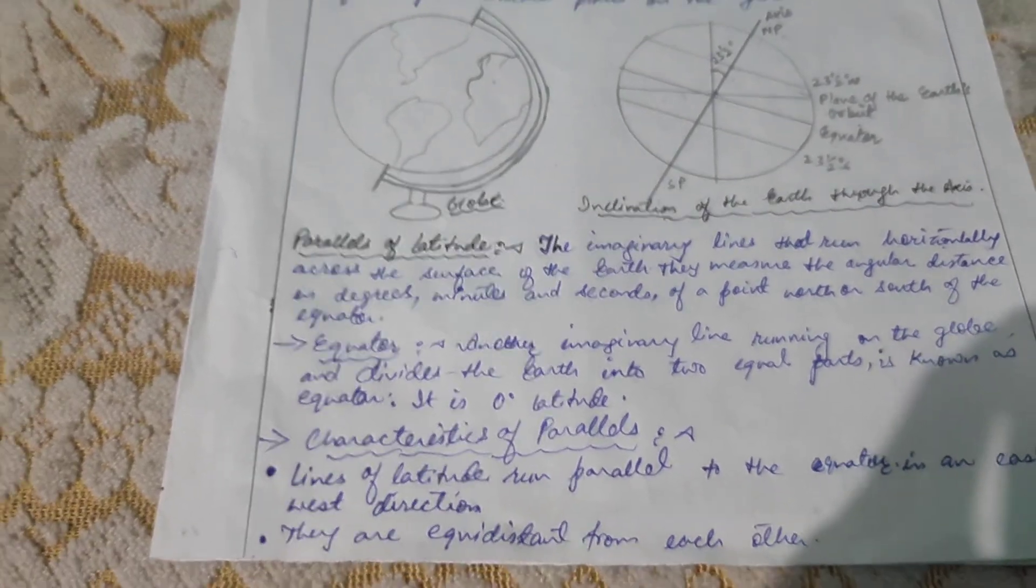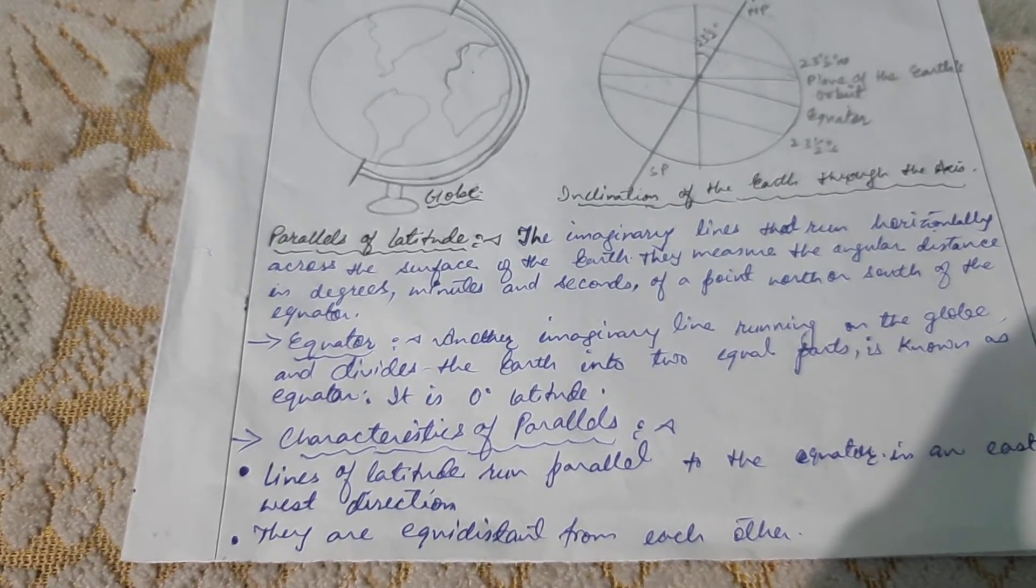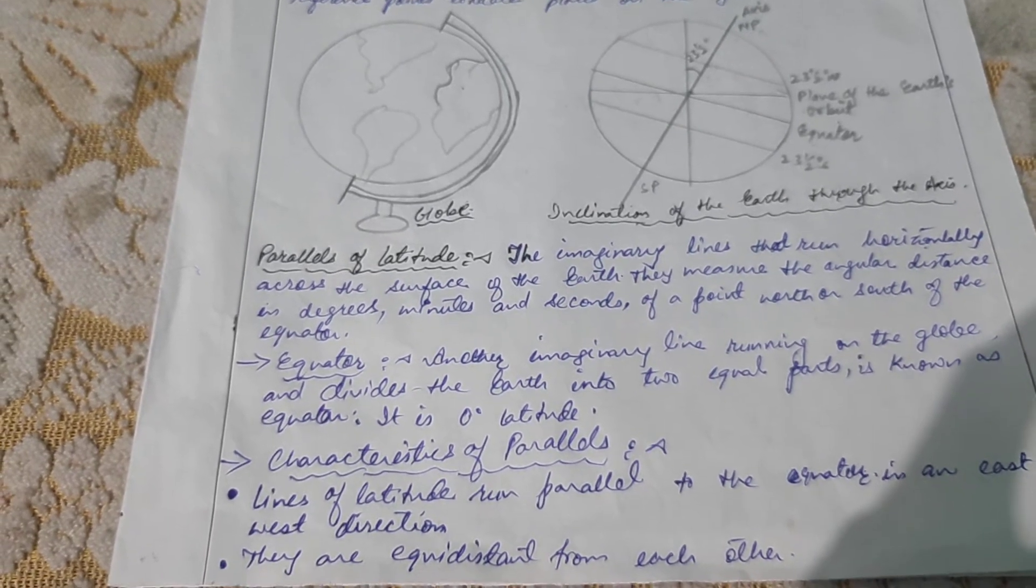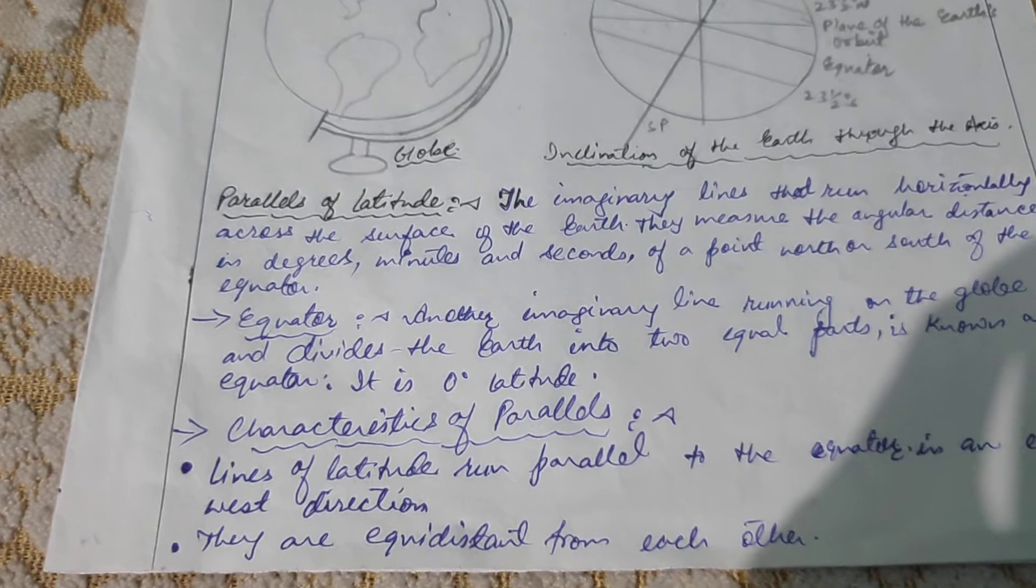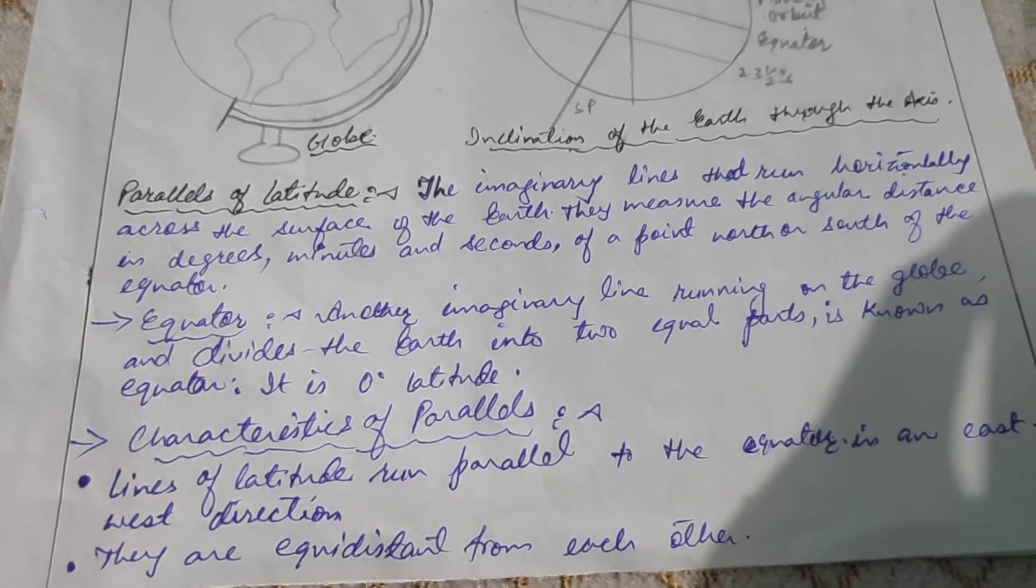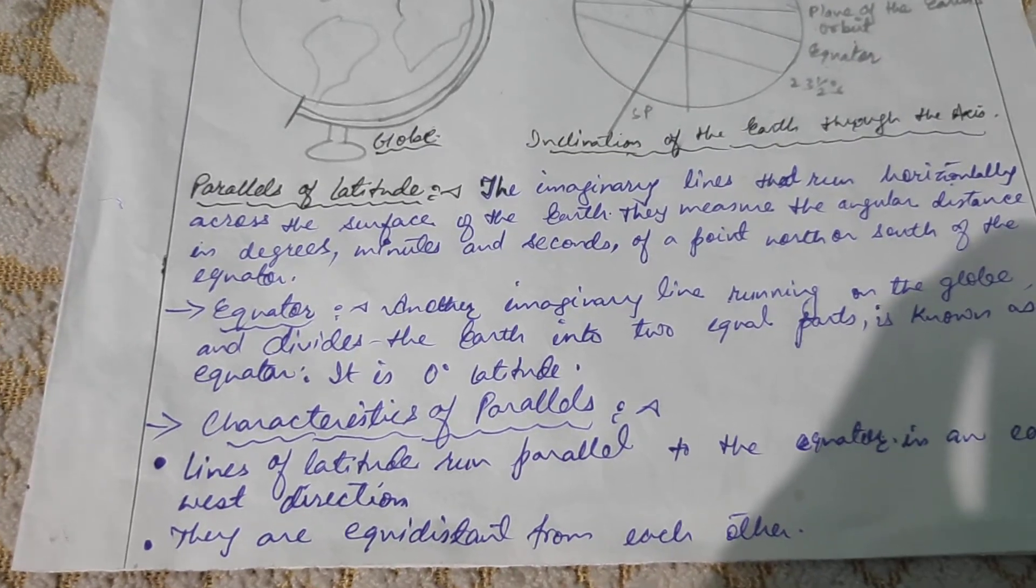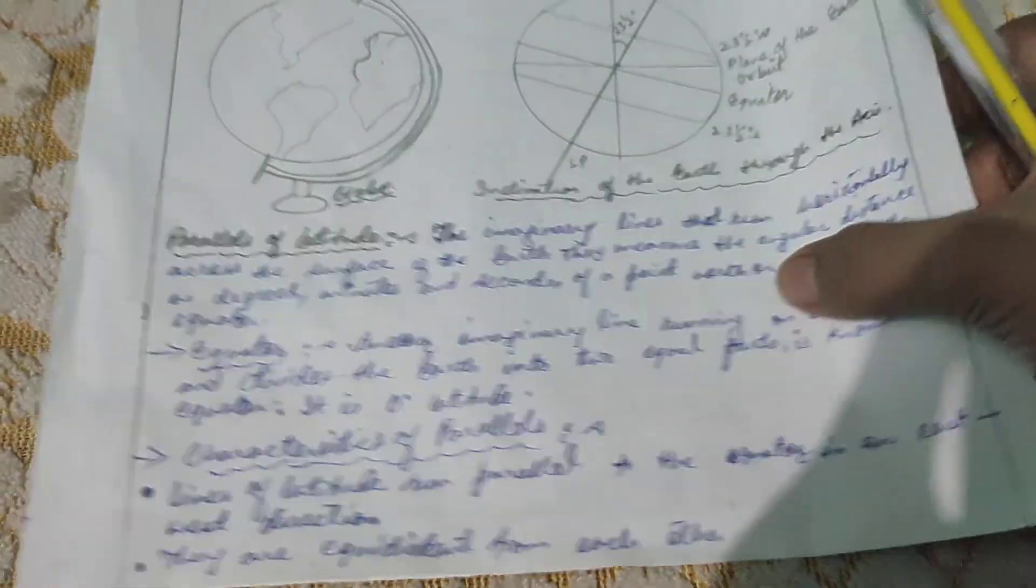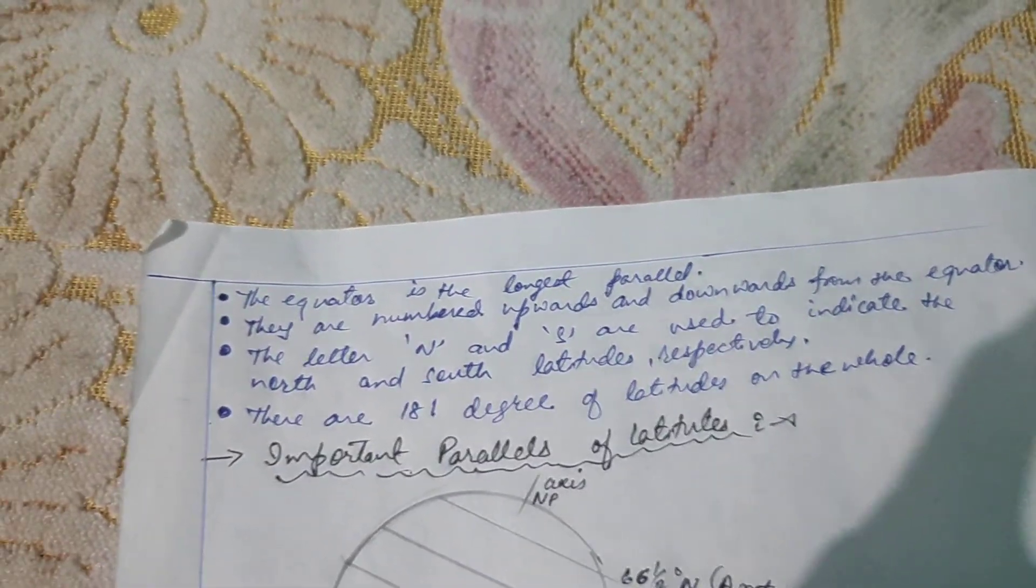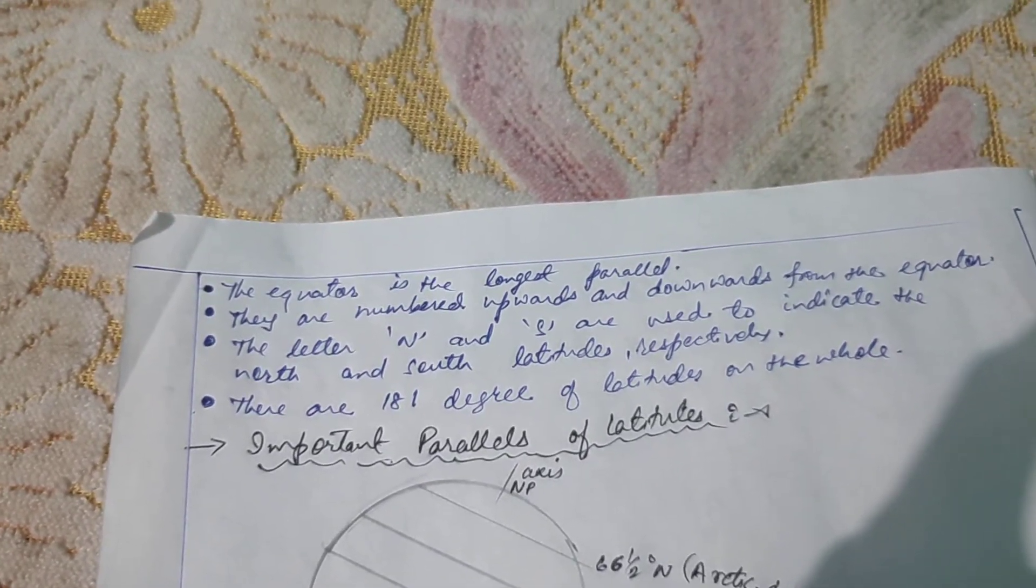Let's discuss some of the characteristics of parallels. The first and foremost characteristics of parallels is that lines of latitude run parallel to the equator in an east-west direction. However, they give the north-south coordinate of a place. They are equidistant from each other. The equator is the longest parallel.